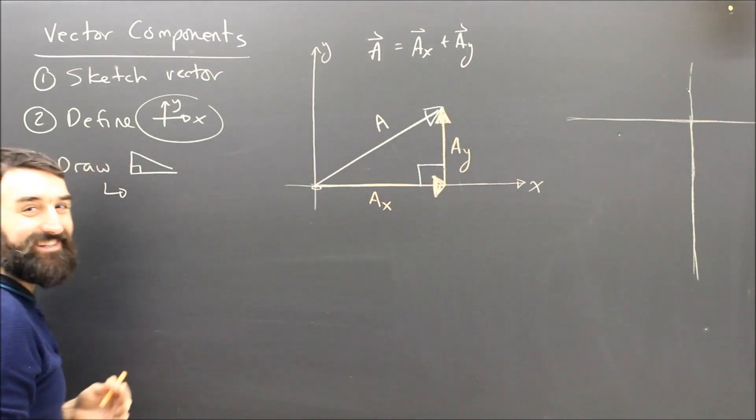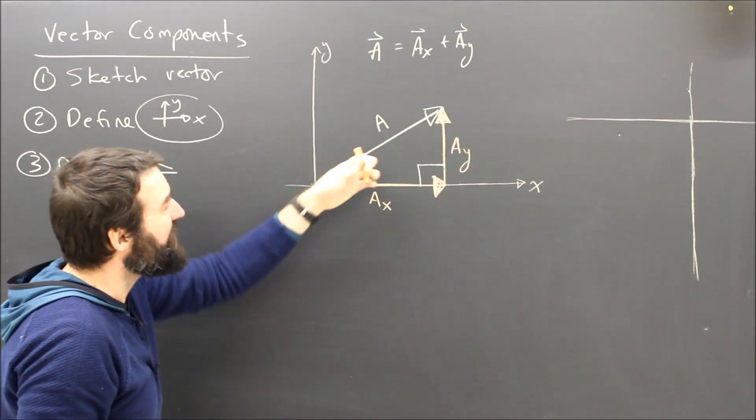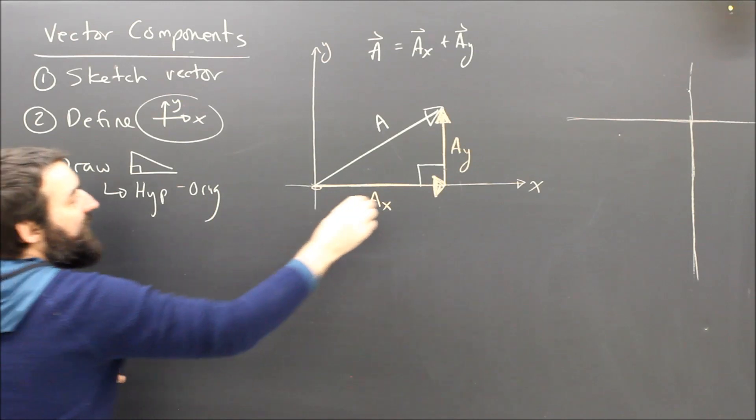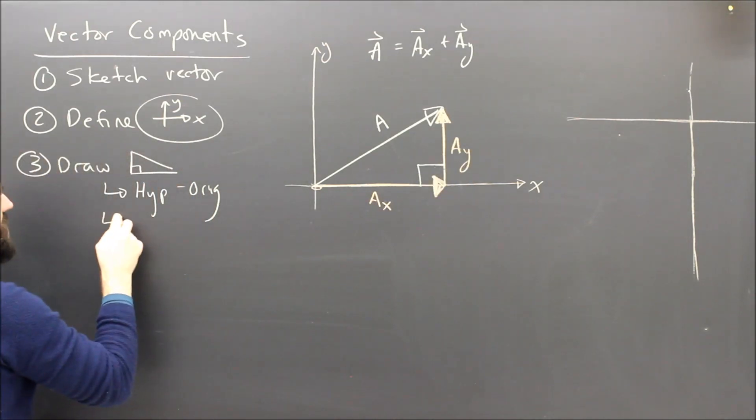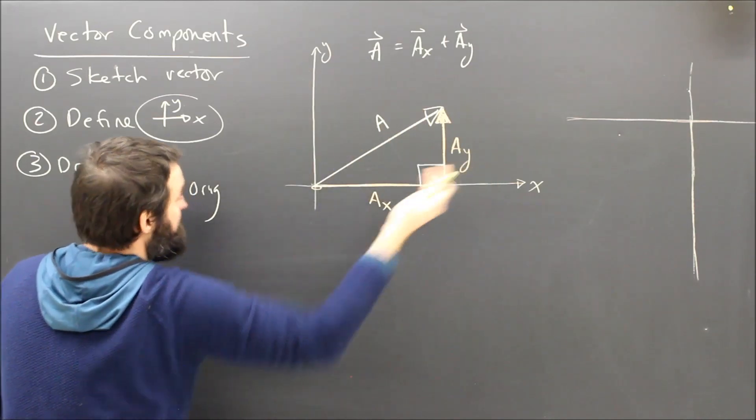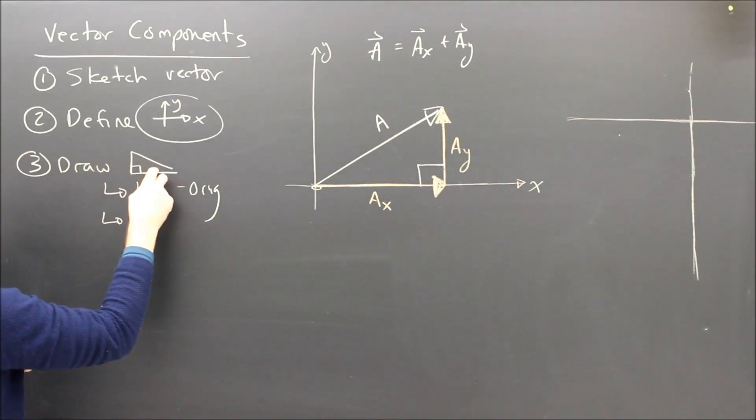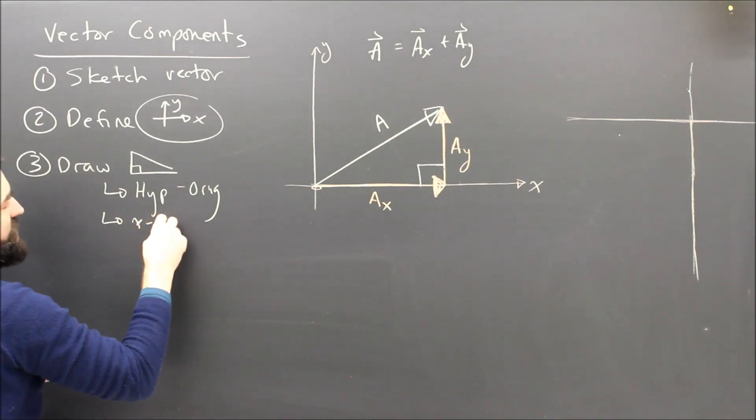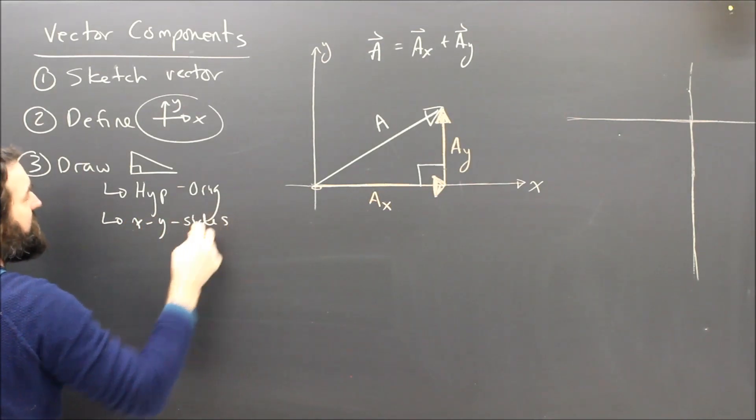But it's important, it's easy in this case, but it's important that you understand that the original vector is the hypotenuse. And that the other two vectors are in the x and y direction. The other two sides of the triangle are in the x and the y direction. So the triangle that we draw, the hypotenuse is the original vector, and the other two sides are in the x and y direction.